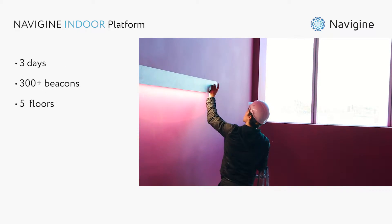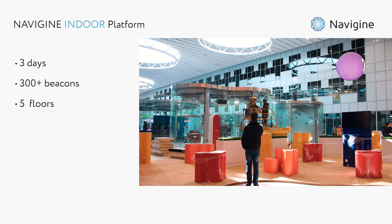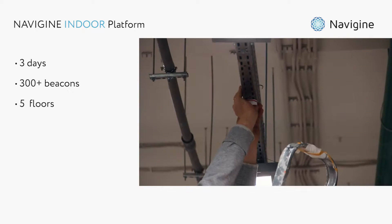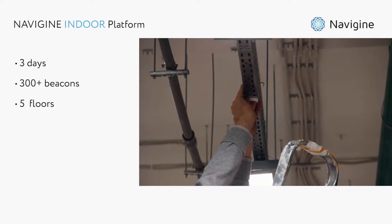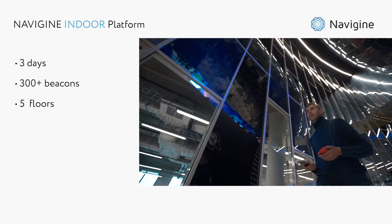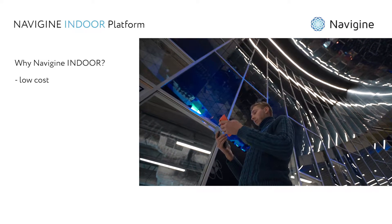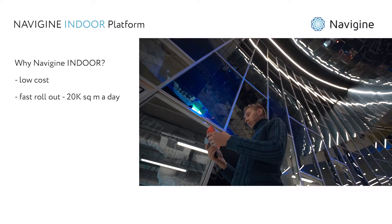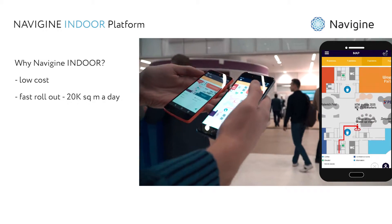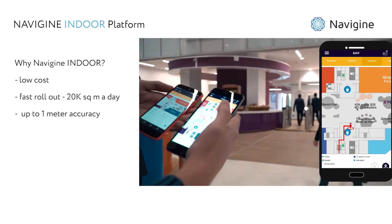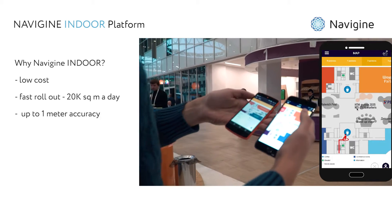In total, 300 beacons were deployed in five levels of the technopark in less than three days. The Navigen platform, leveraging Bluetooth beacons and inbuilt smartphone sensors, provides navigation with up to one meter accuracy.